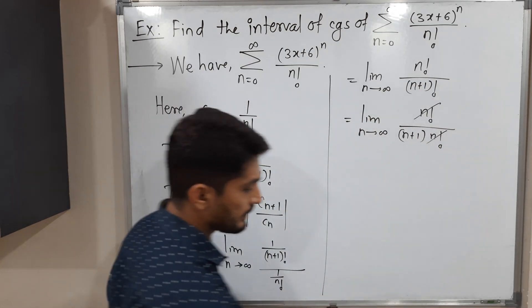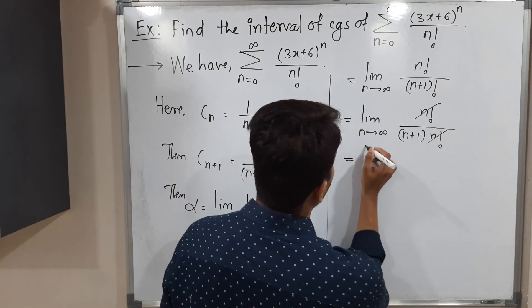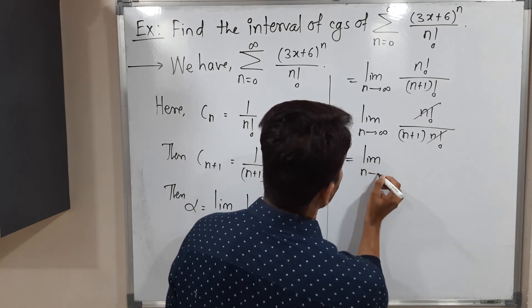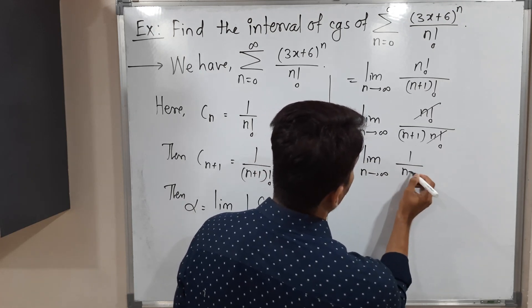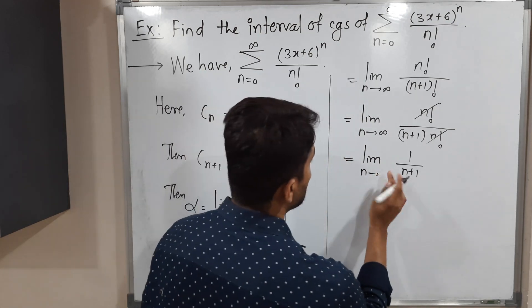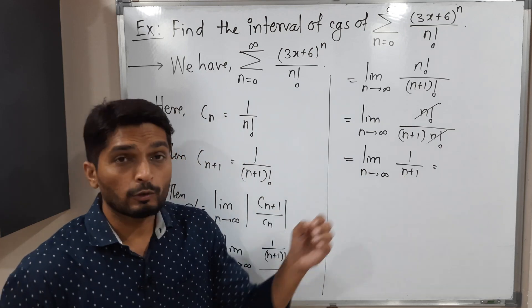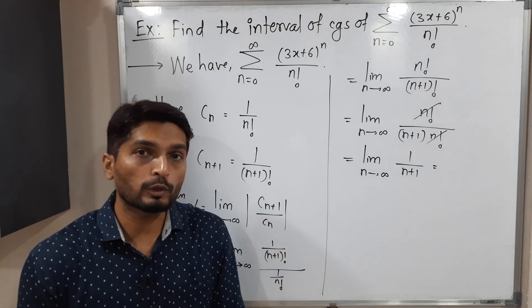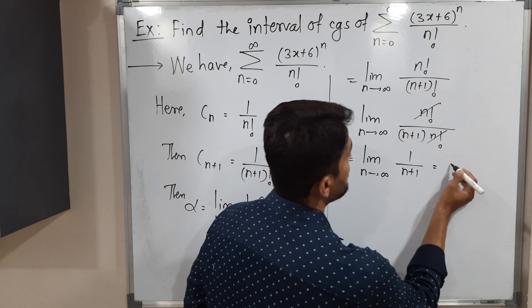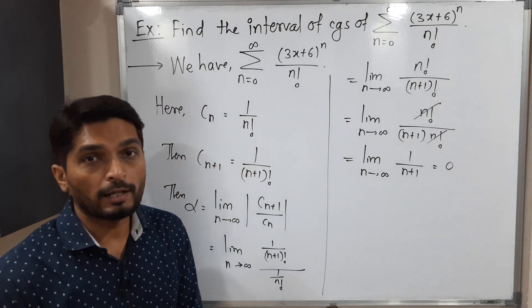Okay, so what will happen? This n factorial and n factorial we can easily cancel, and we will have limit n tends to infinity 1 upon n plus 1. So if you apply the limit, let us see what we will get. The denominator will be infinity, and 1 upon infinity is 0. So the value of alpha is 0.